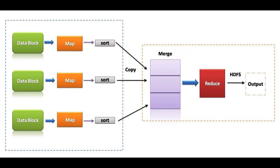The MapReduce program is a data processing framework that is helpful to process data on the cluster. Map and Reduce are two continuous phases. Every map job functions on separate parts of data. The reducer works on the data produced by the mapper on distributed data nodes after the map phase. MapReduce uses disk I/O to perform operations on data.